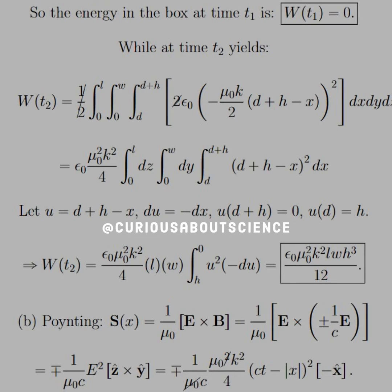So, the energy in the box at time T equals 1 is 0. We don't have any energy in there because the fields don't exist at that time, within the box anyways, based on the piecewise definition. However, for T2, we have W of T2.